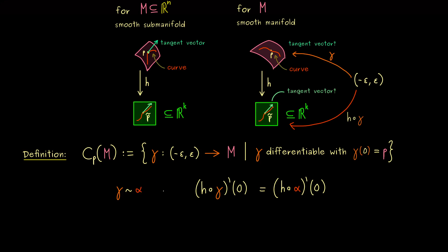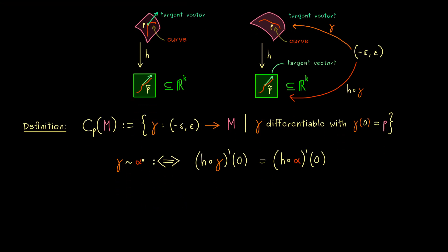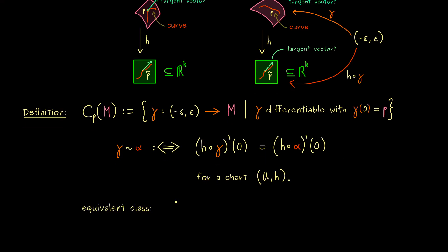Hence we see, this new equivalence relation is defined with the right hand side. So if the derivatives are the same on the lower level, we call the two curves equivalent. And here please note, it does not matter for which chart you check that. So you just have to check that for one chart (U,h). Indeed, if you change the charts with transition maps, we still get the same result here.